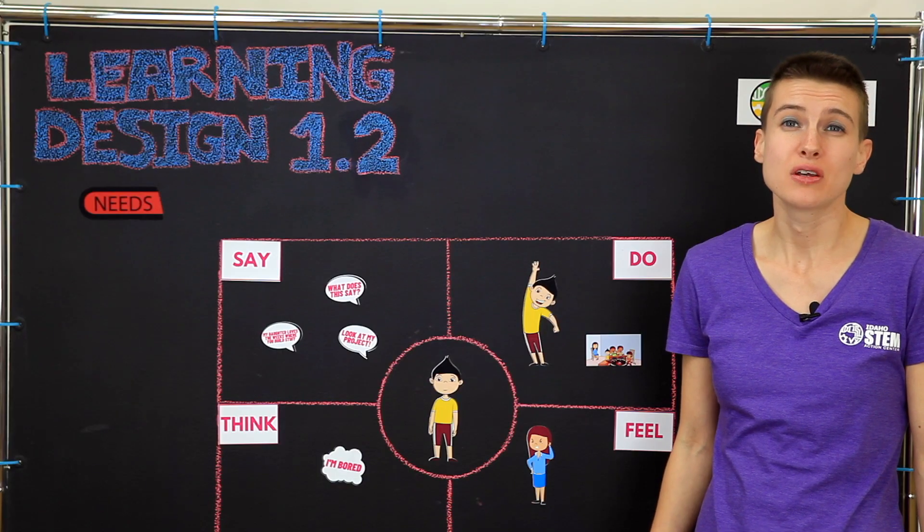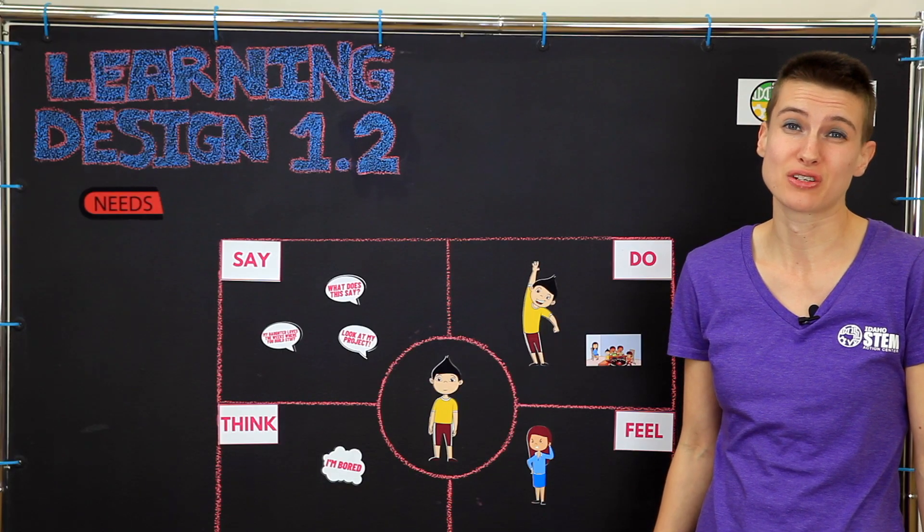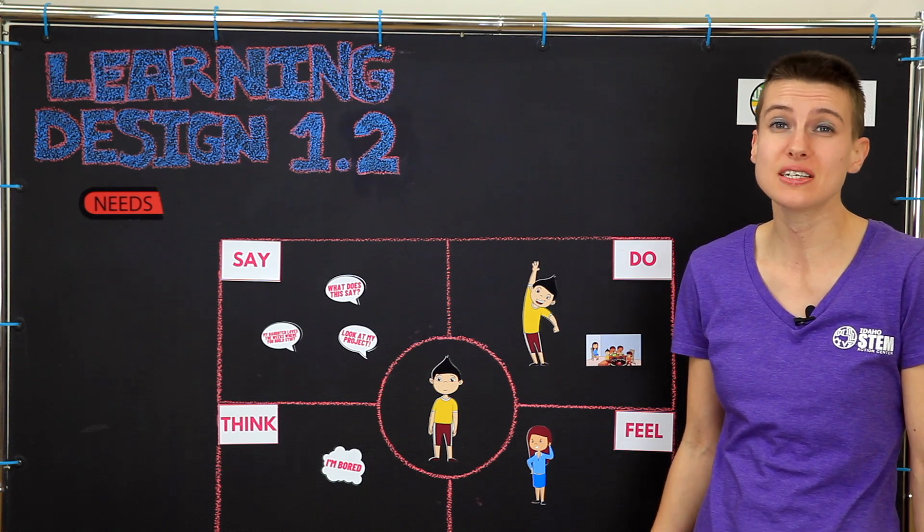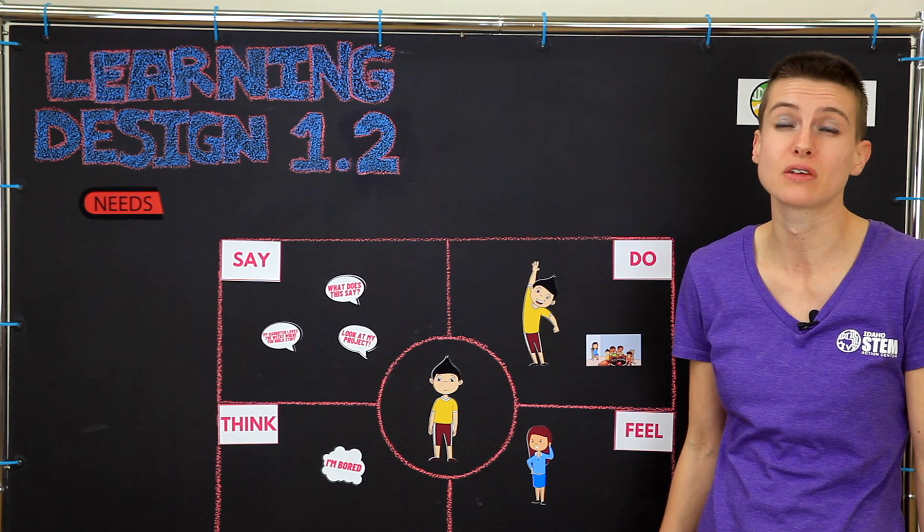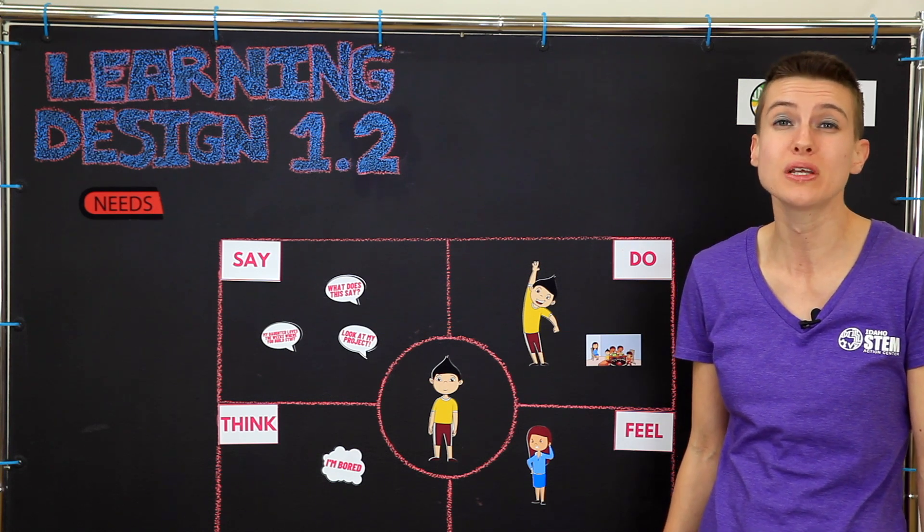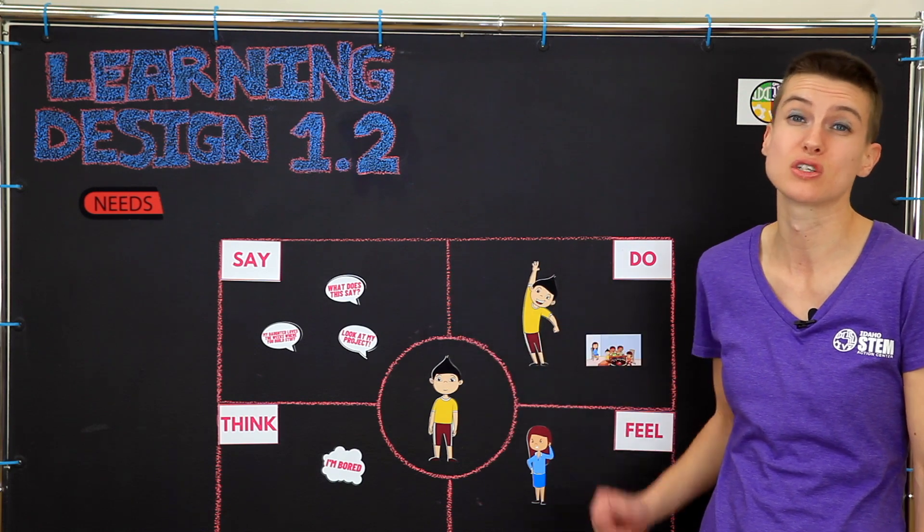But most of the time, your learners won't broadcast this information for everyone to see. In fact, they might not even know what they're thinking or feeling themselves. In these cases, we want to look for patterns of learner behavior and reflect on the reasons behind them, including looking back at the more direct observations we've already made.